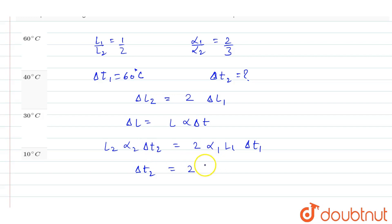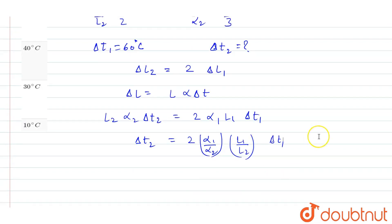Del T2 will be equal to 2 times alpha 1 by alpha 2 into L1 by L2 into del T1. Now L1 by L2 is 1 by 2, and alpha 1 by alpha 2 is equal to 2 by 3.